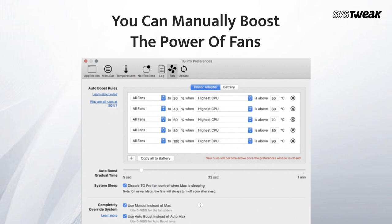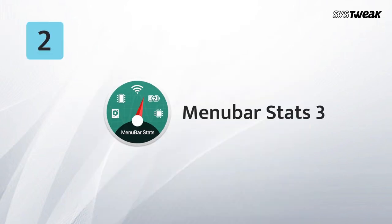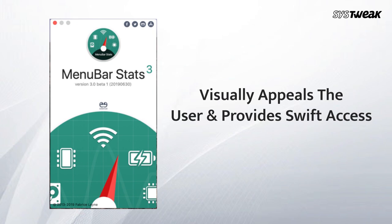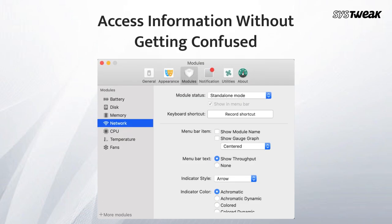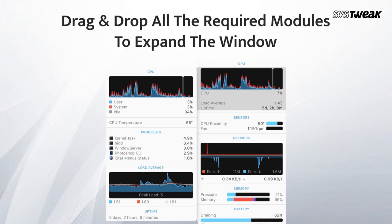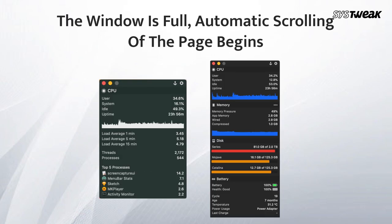Number two: Menu Bar Stats 3. This Mac CPU monitor offers a different level of experience that visually appeals to the user and gives swift access to all information. You can drag and drop all the required modules to expand the window, and when the window is full, automatic scrolling of the page begins.